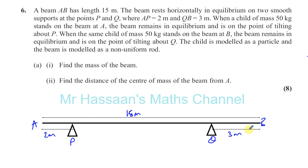When a child of mass 50 kilograms stands on the beam at A, the beam remains in equilibrium and is on the point of tilting about P. When the same child of mass 50 kilograms stands on the beam at B, the beam remains in equilibrium and is on the point of tilting about Q. The child is modeled as a particle and the beam is modeled as a non-uniform rod. Let's have a look at this.